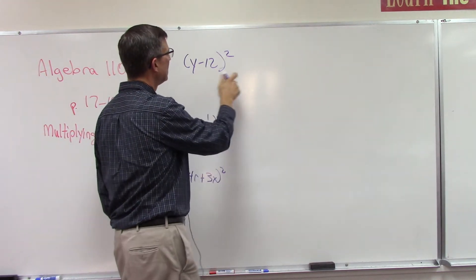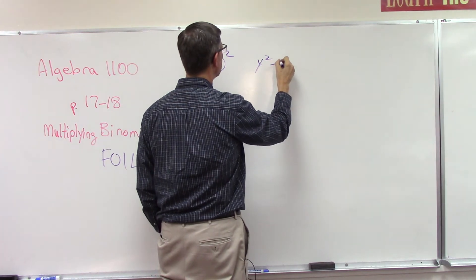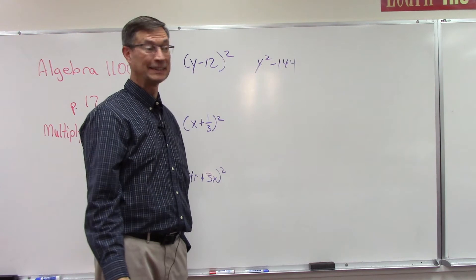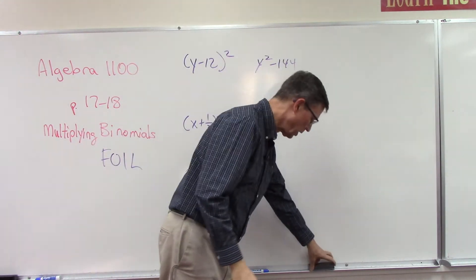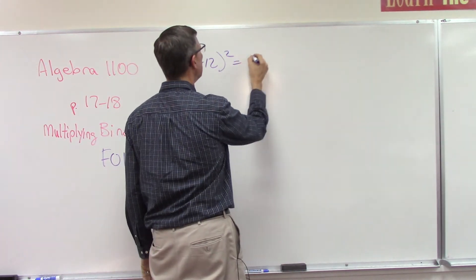Students are tempted to look at that and say, 'Oh, I know what that is. That's y² minus 12 times 12 is 144.' And that's not correct, that would be wrong. So how do we actually do this? The best way is just to write it out in long form.